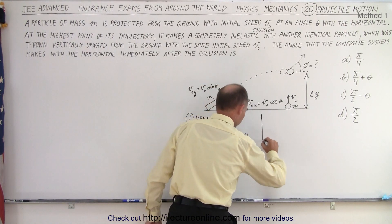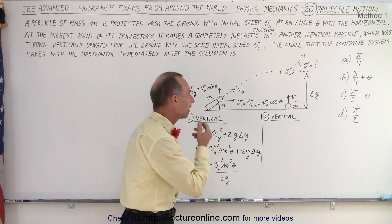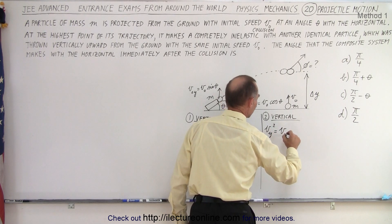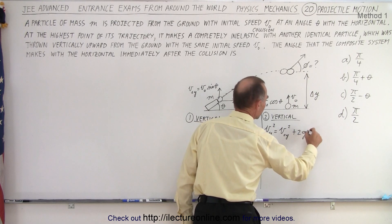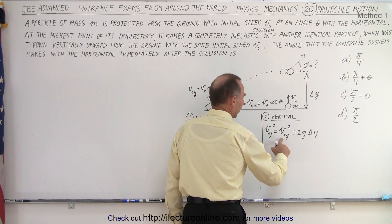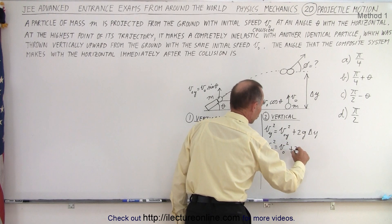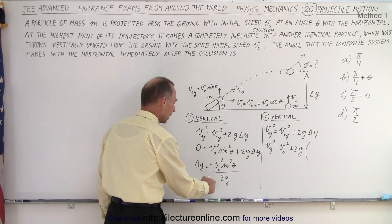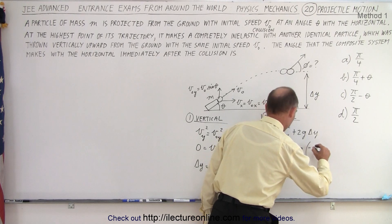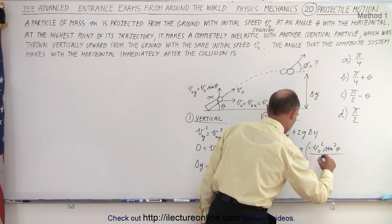So now we're going to work with particle number 2. And particle number 2 also has the vertical direction. We're going to use v in the y direction squared is equal to v initial in the y direction squared plus 2g delta y. And of course we're dealing with the same delta y that we have over here. My initial velocity in the y direction is simply going to be v initial squared. So this becomes v y squared is equal to v initial squared plus 2g times delta y, which is going to be equal to minus v initial squared times the sine squared of theta divided by 2g.